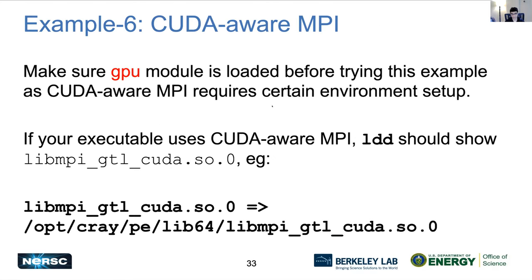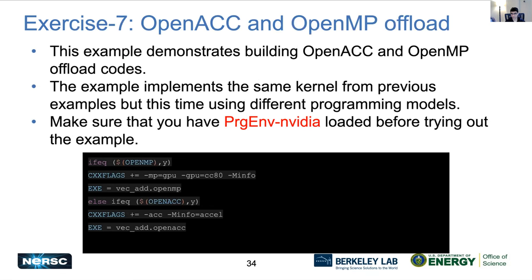Example six tries to explain this concept — it's a simple example that shows you how to send a message to the GPU located on a remote node and tries to verify that the message was received correctly. Then in exercise seven we explore OpenACC and OpenMP offload methods, which are two programming models other than CUDA that you can use to target GPUs. This example contains the same kernel that we had in CUDA in the earlier example, just rewritten in OpenACC and OpenMP, so you can compare and contrast how these three models differ from each other.